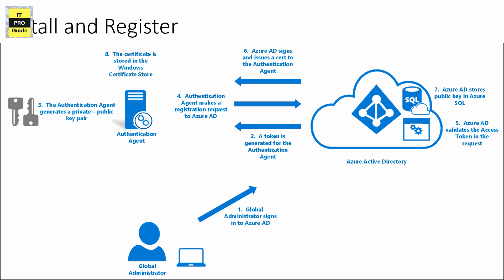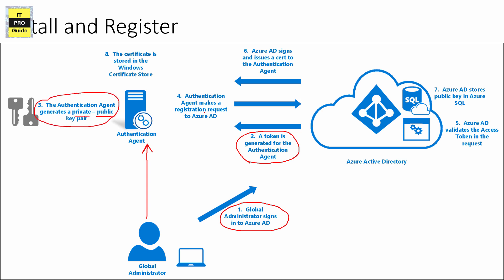This process repeats with each new authentication agent you install for high availability. In detail, the registration process works as follows: first, you sign into Azure AD Connect with your global administrator credentials so that the authentication agent gets an access token to communicate with Azure AD. Once you enter your Azure AD credentials and it gets a token, the authentication agent generates a key pair — a public key and a private key — and sends a certificate signing request as part of its registration with Azure Active Directory.